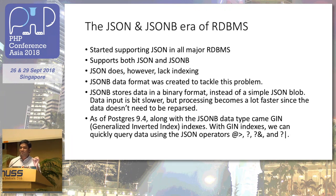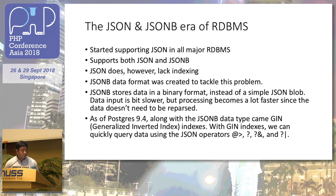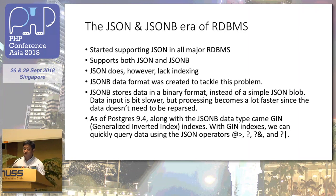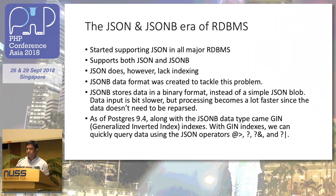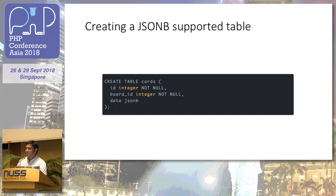Lots of database engines are now starting to support JSON, and one of my favorites is PostgreSQL. They have very good support for JSON and JSONB. It's not native JSON — a little different from what we see in MongoDB — but it solves the purpose, and in some cases it's better. JSONB, which they call JSON-better or binary JSON, is actually PostgreSQL's preferred version. It tackles the indexing problem we previously had. This data type helps us mix both structured and JSON data at the same time, and it's pretty easy to use — just create a column with the JSONB data type.